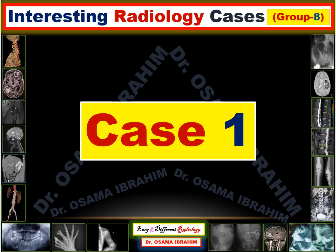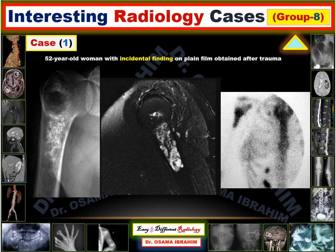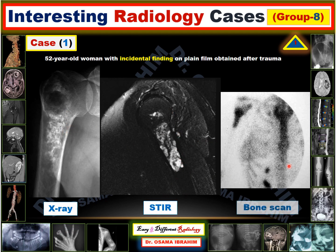Case one. A 52-year-old woman with incidental findings on a plain film obtained after trauma. This case was introduced at the end of the last presentation as a challenge. This is the X-ray, this is the STIR image on MRI, and this is the bone scan, showing an intramedullary lesion in the proximal humerus. The lesion shows high signal on STIR and only mild uptake of tracer on the bone scan.